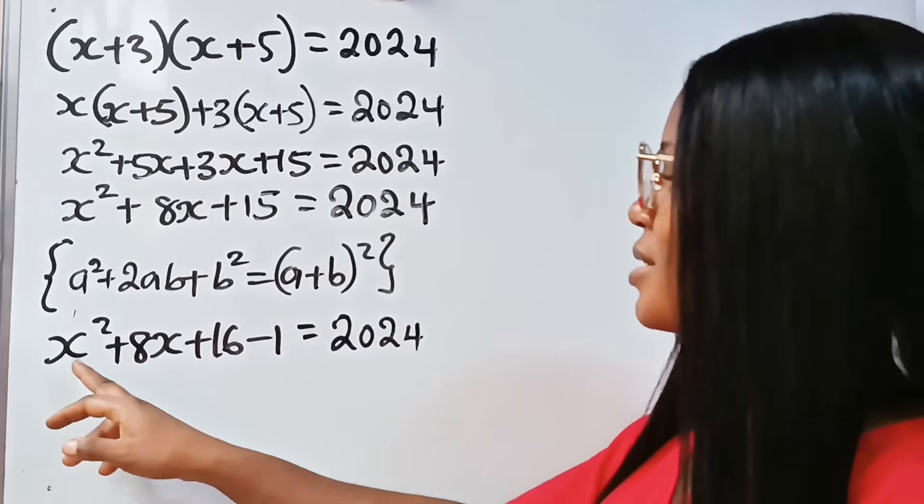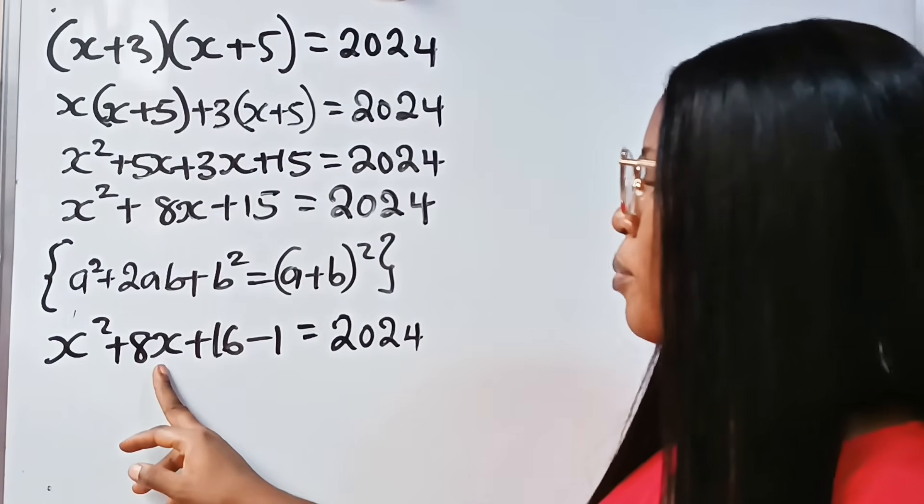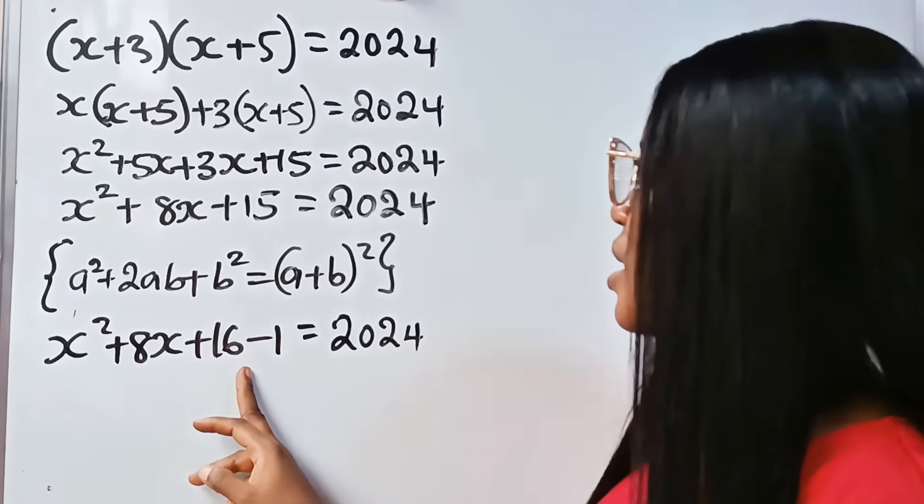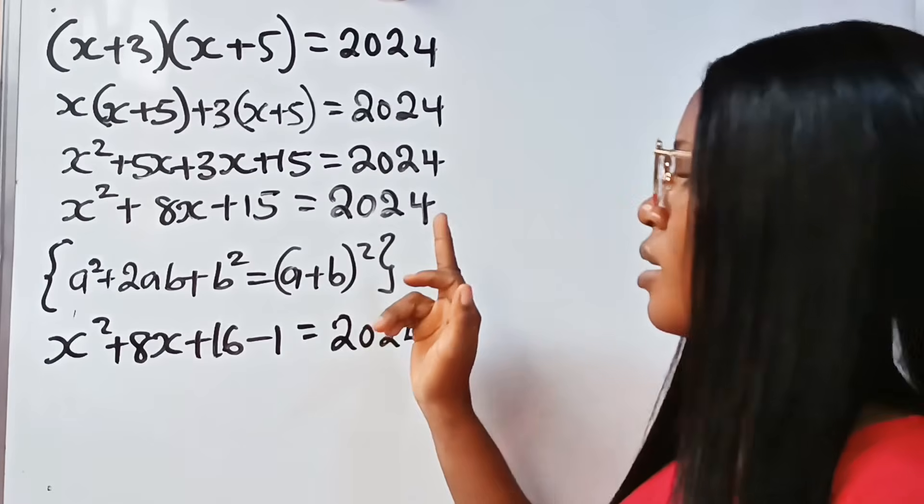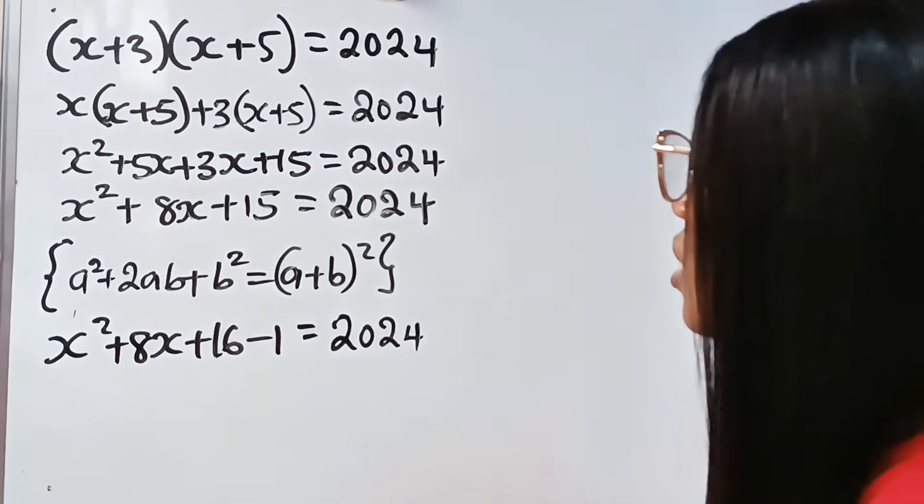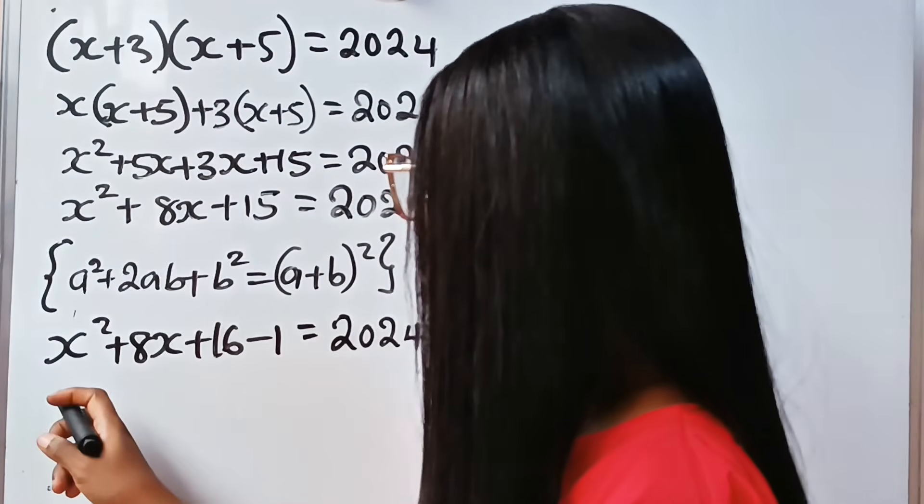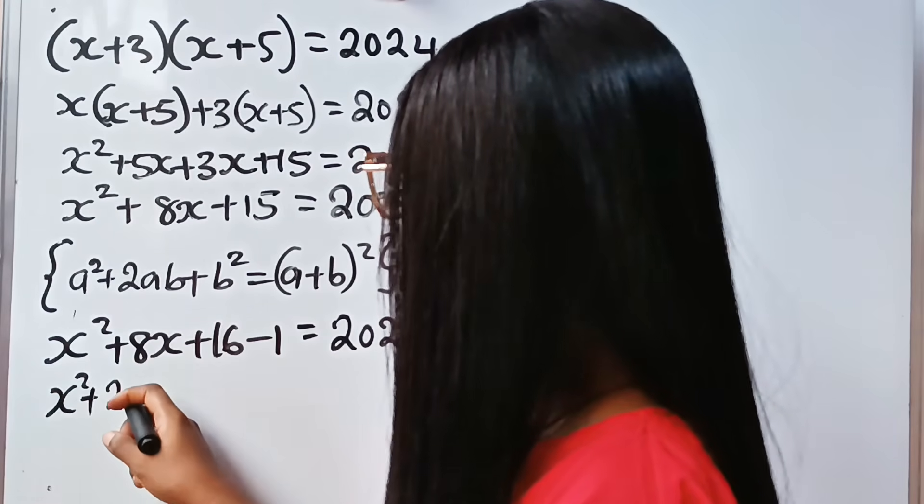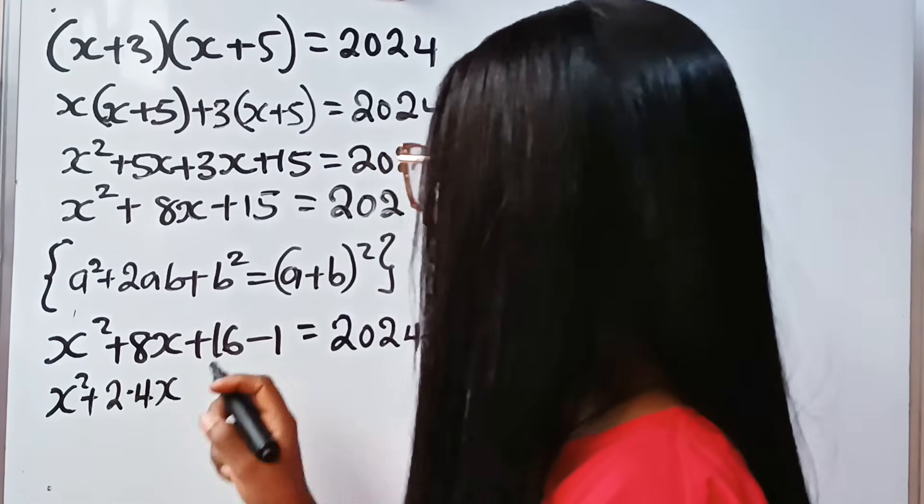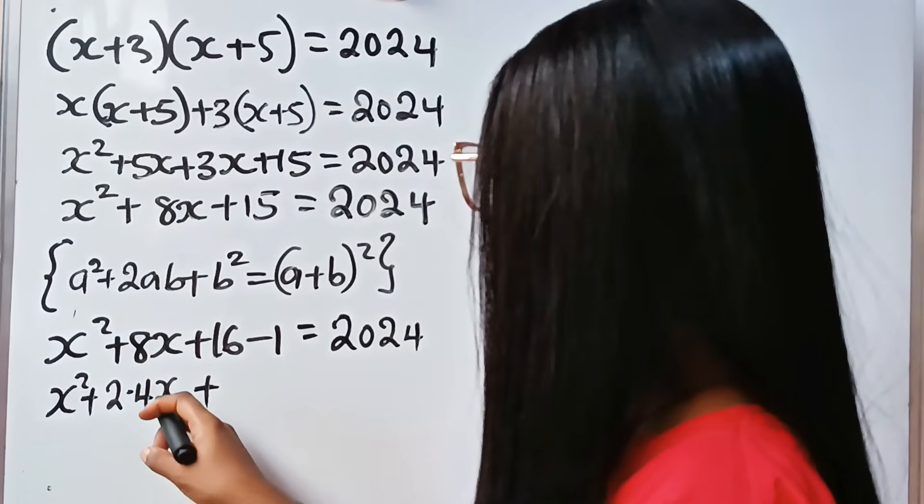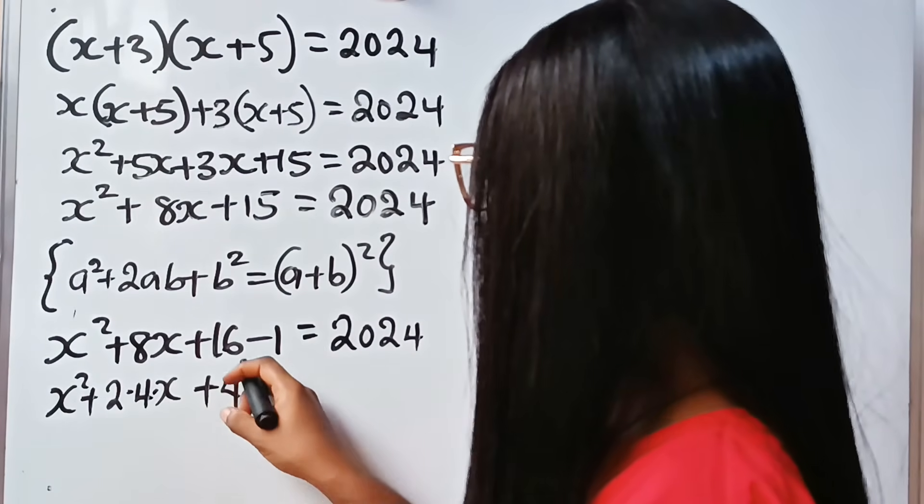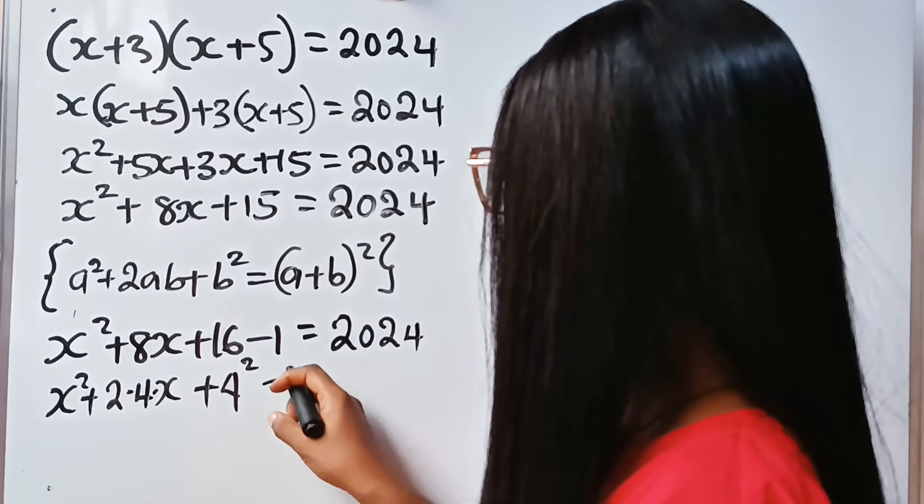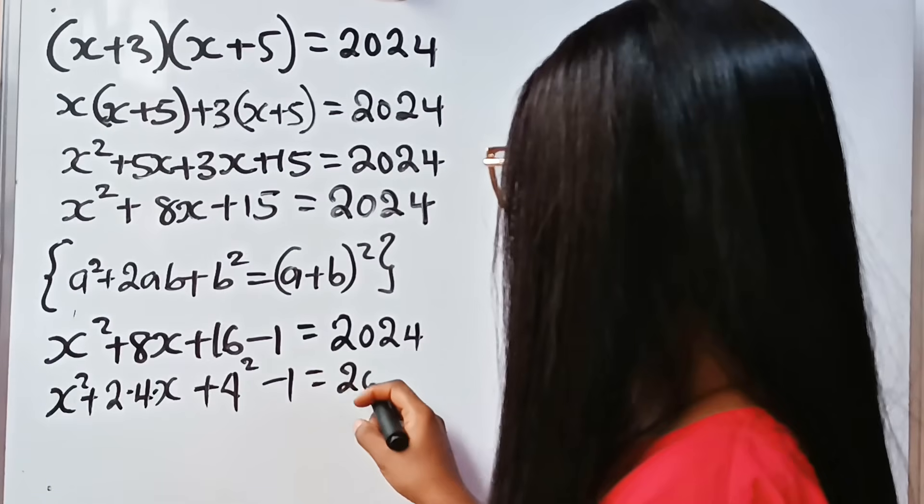Remember that a² + 2ab + b² = (a + b)². So this can be written as x² + 2(4)(x) + 4², minus 1 equals 2024.